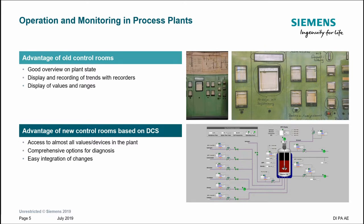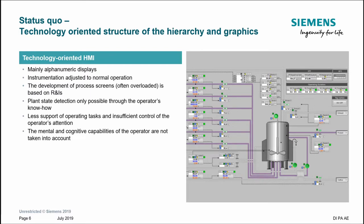Today's new control rooms based on DCS are completely digital, meaning operators have access to nearly all the valves and devices in their plant, with comprehensive options for diagnosis. Screens can easily be changed and customized to suit each operator. However, the downside of having all this freedom to visualize the plant can make operating screens complex and confusing, overloading operators and requiring them to rely on their own know-how.